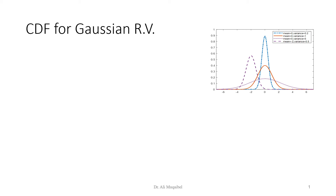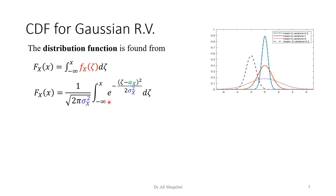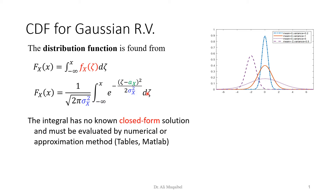Let's look at the cumulative distribution function (CDF) for a Gaussian random variable. On the side you can see different Gaussian random variables with different means and variances. The CDF is the integral of the PDF: capital F is the integral from negative infinity to X of the PDF with dummy variable zeta. Substituting the Gaussian PDF into the integral, unfortunately there is no closed-form expression or solution for this integration.